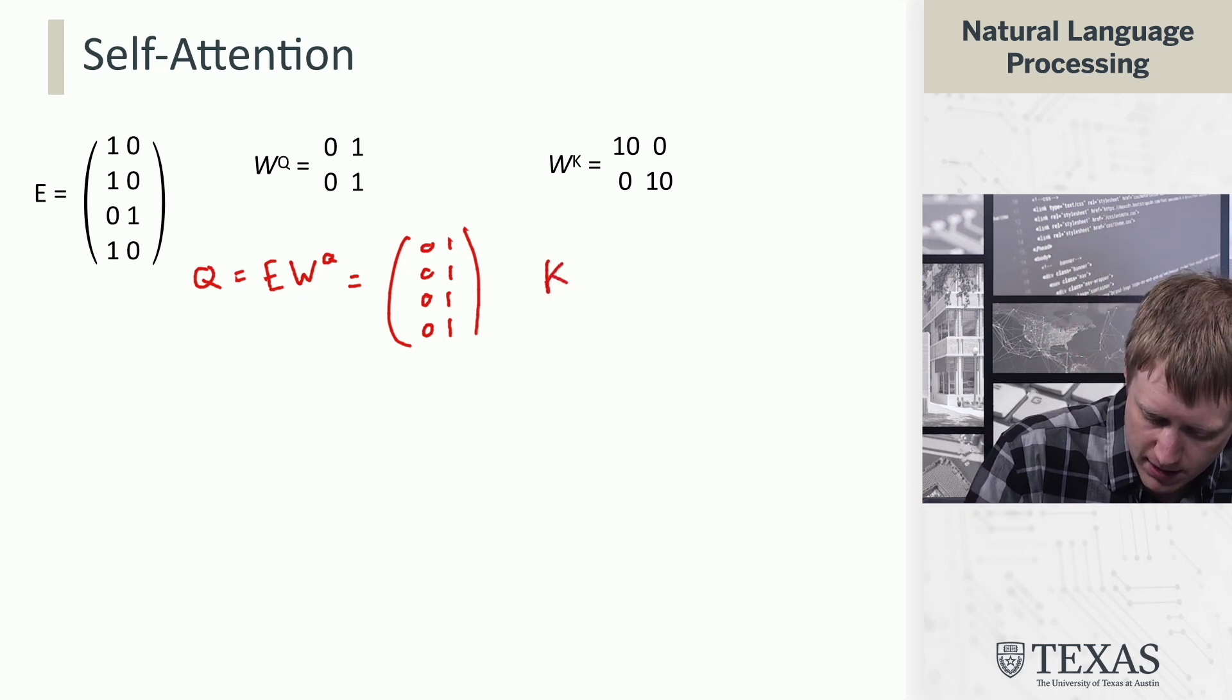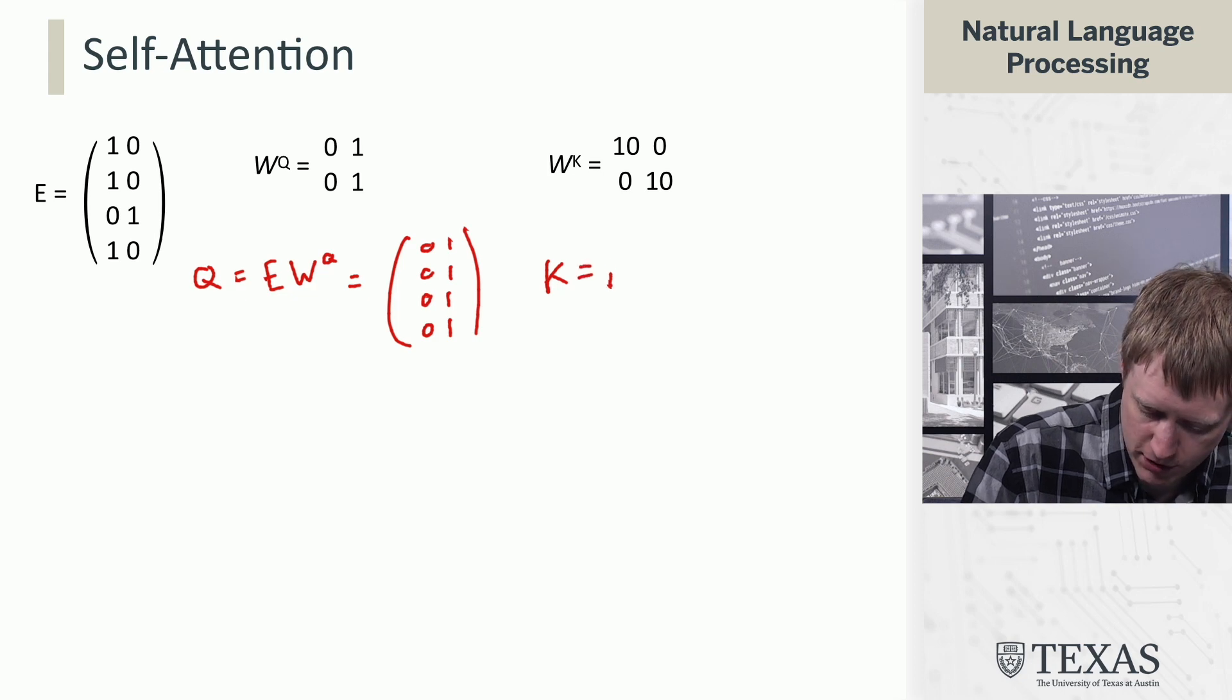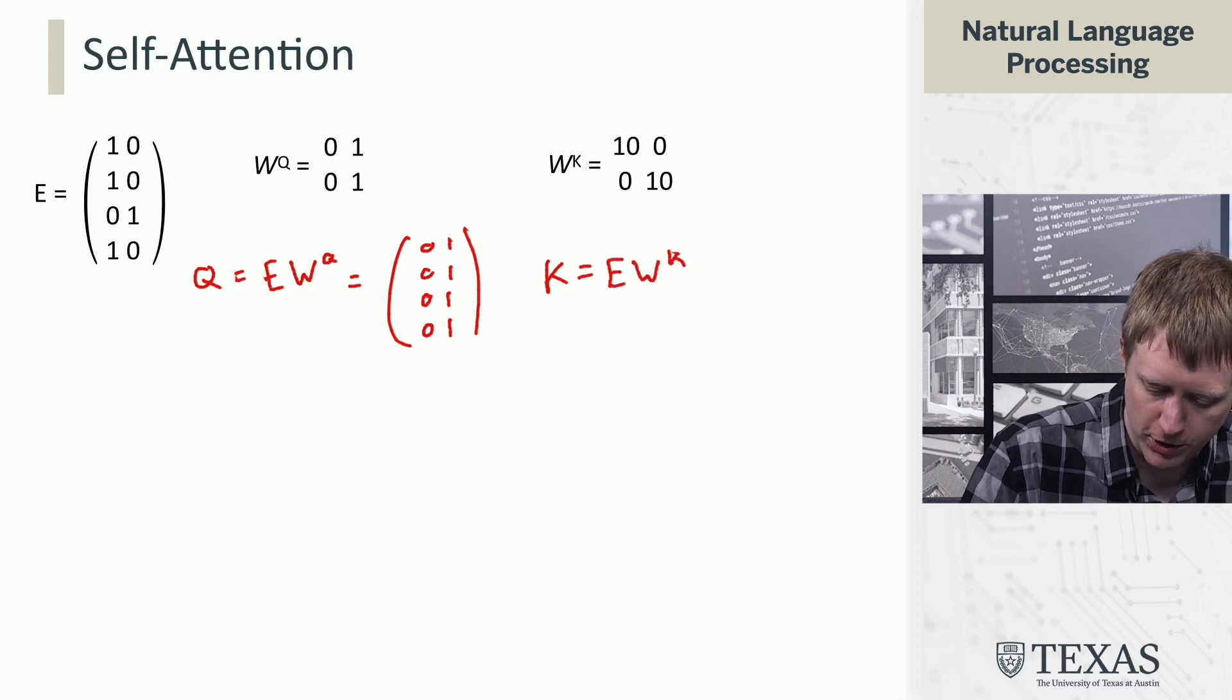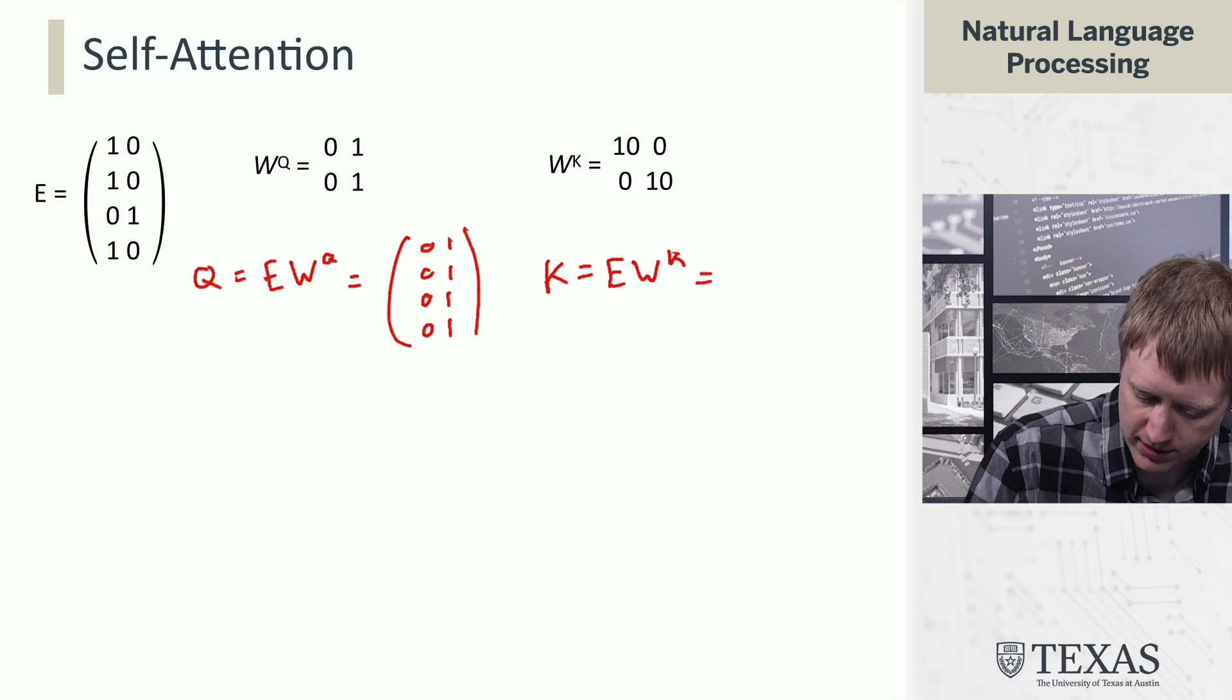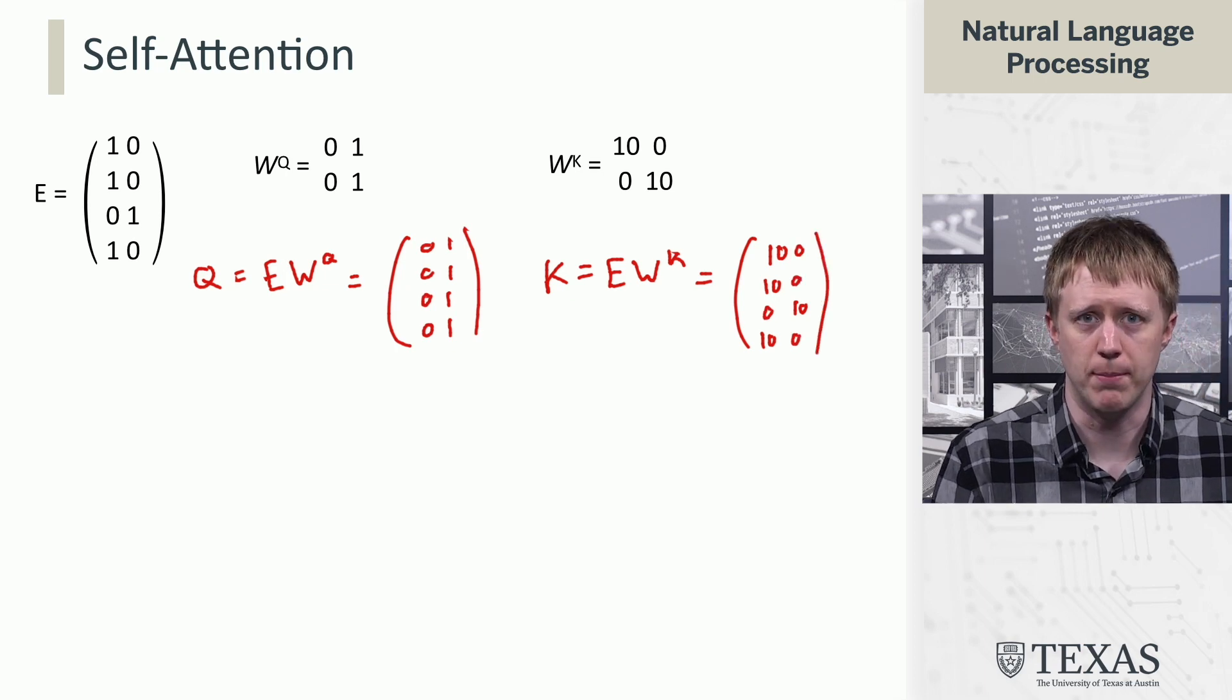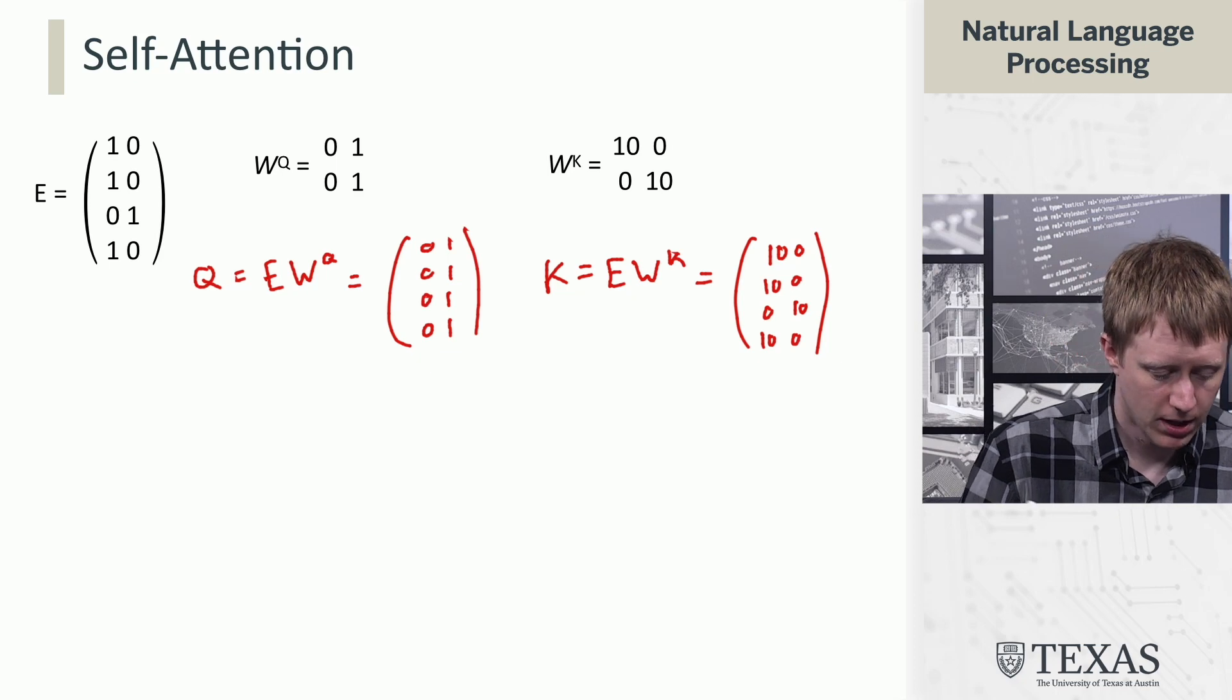Then the keys get the same treatment, but they're multiplied by this WK matrix, and what that does is it just scales up the raw embeddings in E.